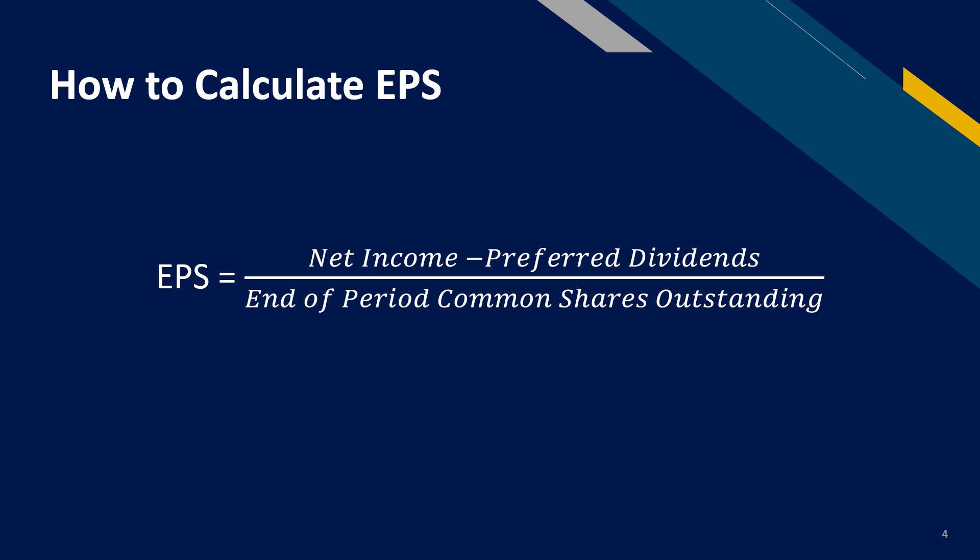On the bottom line, we have the total number of common shares outstanding. These are common stock holdings of equity holders. From this calculation, we know how much profit the company is earning for each share it has issued.